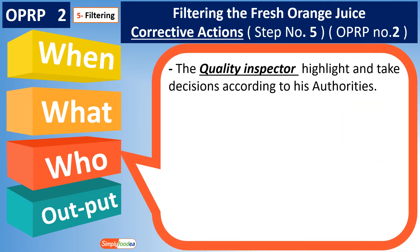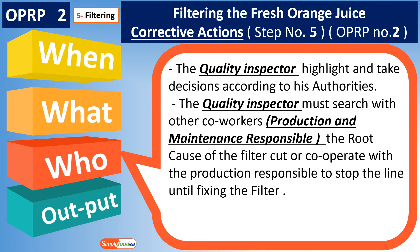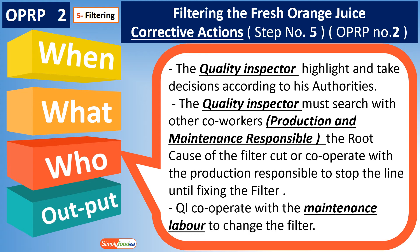Who will be responsible? The quality inspector will highlight the issue and make decisions according to their authority. The quality inspector must work with co-workers — including the production team and maintenance responsible — to find the root cause of the filter cut, and cooperate with the production responsible to stop the line until the filter is fixed. All corrective actions and responsible personnel must be documented and signed in the HACCP plan so everyone is aware of their role. The quality inspector can also cooperate with maintenance to change the filter.